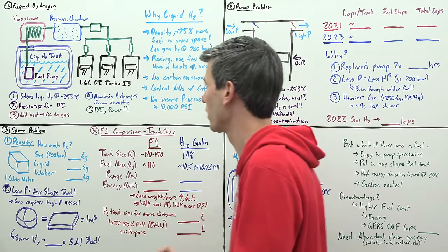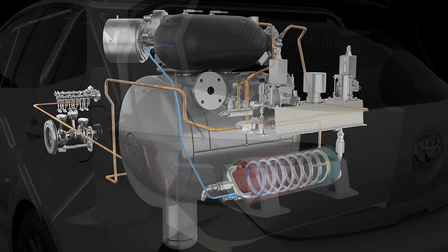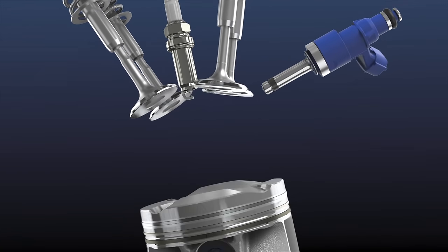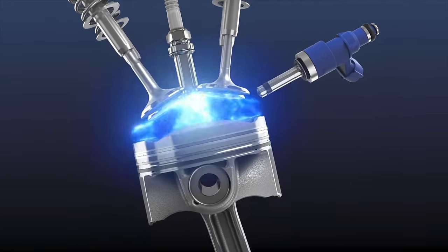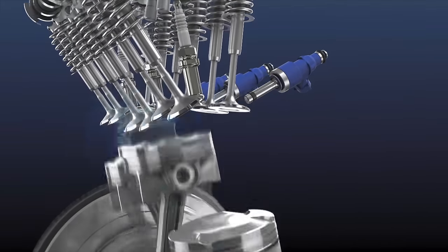In this case it is a 1.6 liter direct injection turbocharged inline three-cylinder in the GR Corolla. From a combustion standpoint it operates much like any other gas engine, just using hydrogen instead of gasoline, and for the most part your only emission is water.